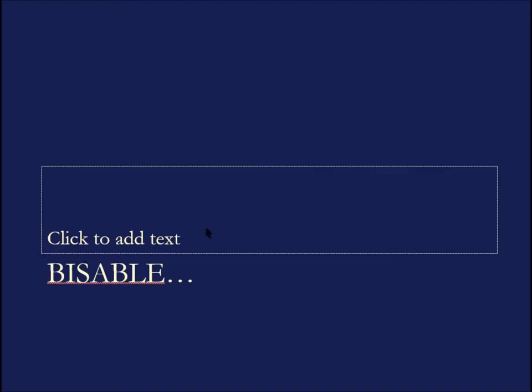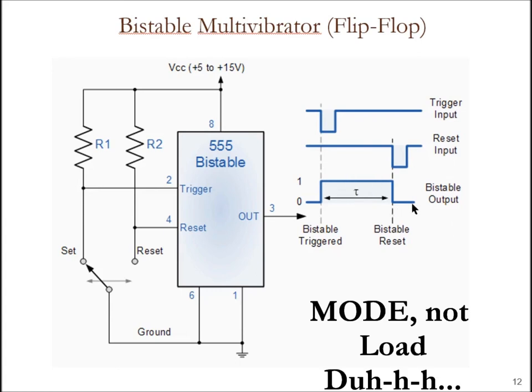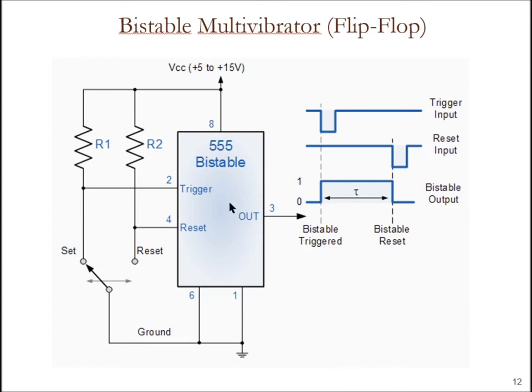Let's look first at the bistable mode. Bistable means I have two, bi for two, I have two stable modes. I have a stable high mode and I have a stable low mode, different than my monostable. What I've got here is set-reset, basically.